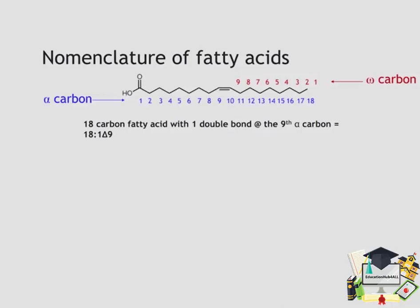The convention here is we typically describe fatty acids with a number, colon, and a number. The number preceding the colon is the number of carbon atoms within the molecule. The number following the colon is the number of unsaturations or double bonds. And the delta is the position relative to the omega carbon where those double bonds are first introduced.